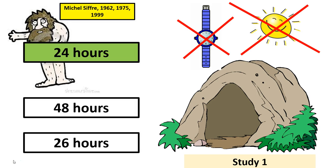The most famous study on this topic was a case study by Michel Siffre. He conducted a number of studies in 1962, 1975 and 1999. What he did was isolate himself in a cave, blocking himself from any exogenous zeitgebers like light and time cues. He ate and slept normally and found that his sleep-wake cycle mirrored the 24-hour rhythm — he slept for 8 hours a day and was awake for 16 hours a day.